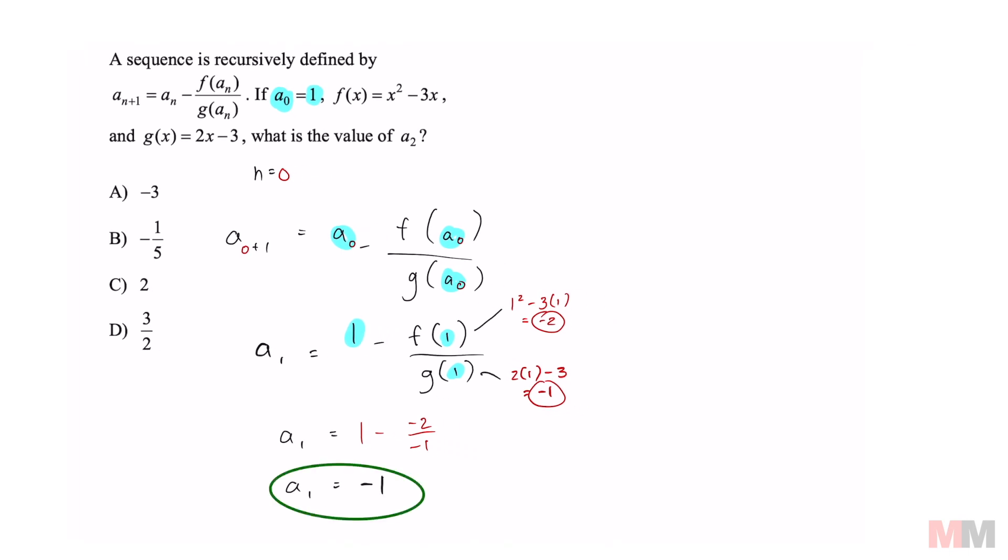However, the question is asking for a sub 2. So we're going to do a similar step like this, and we're going to run through that faster. And this time, we're going to let n equals 1. That is going to help us answer this question right here. Because if you substitute n equals 1, then that is going to get us a sub 2.